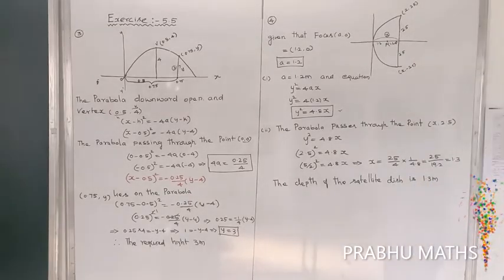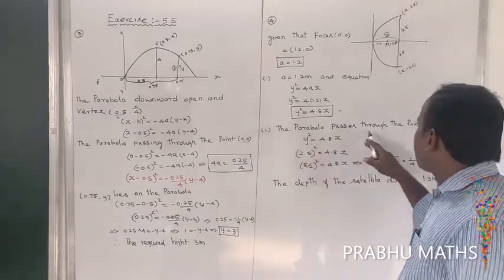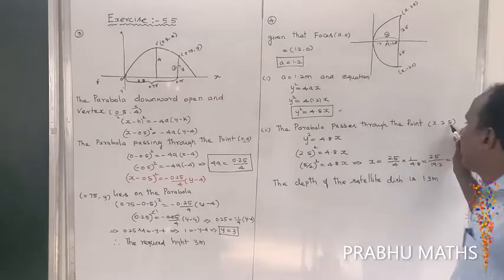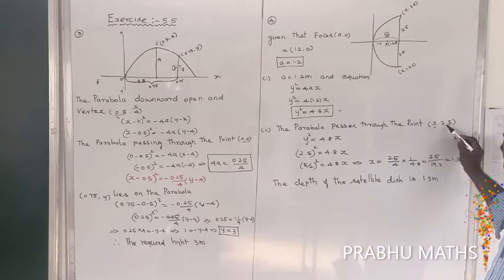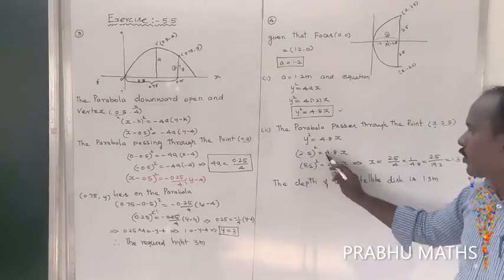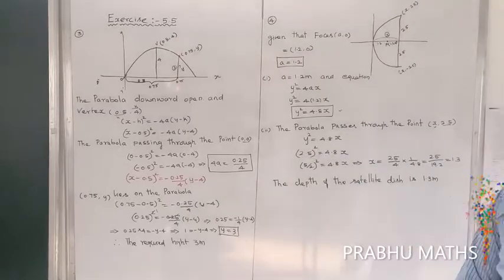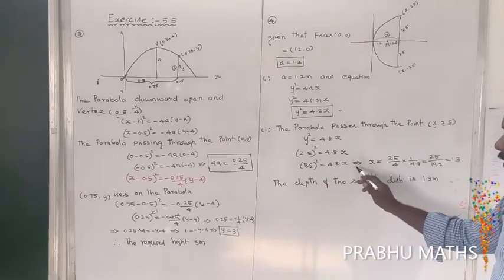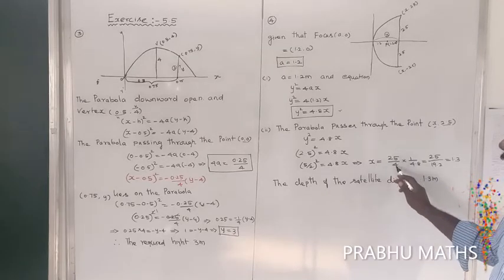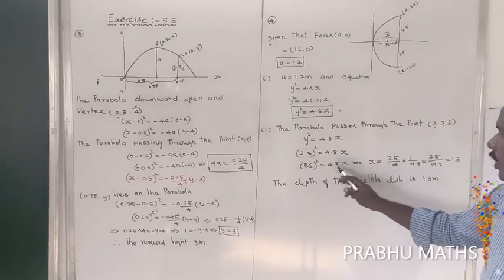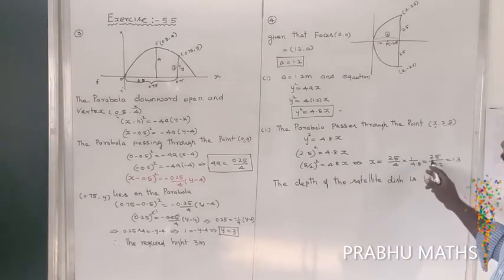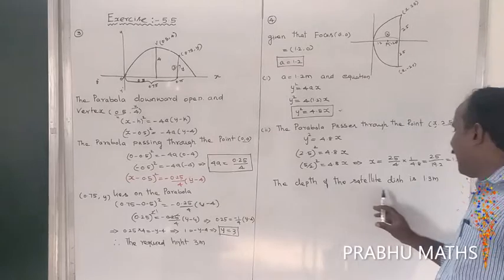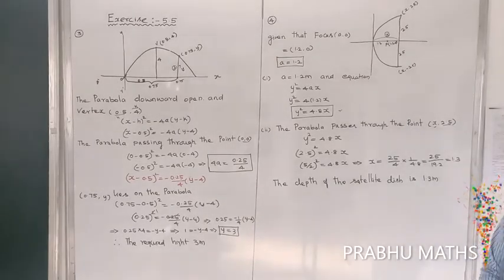The parabola passes through the point (x, 2.5). Substituting y = 2.5: (5/2)² = 4.8x, so 25/4 = 4.8x, which gives x = 1.3 meters. So the depth of the channel at the vertex is 1.3 meters.